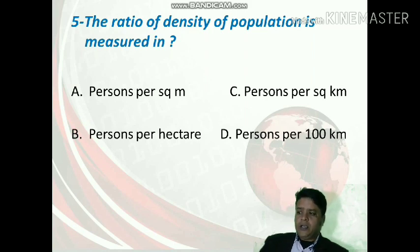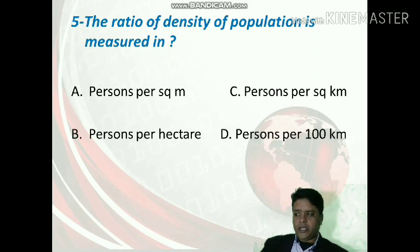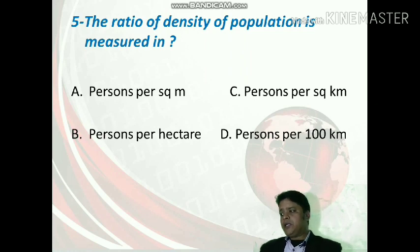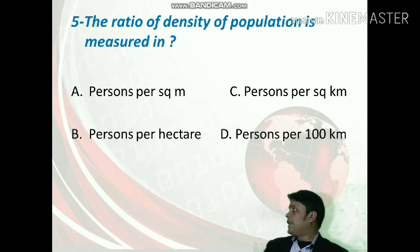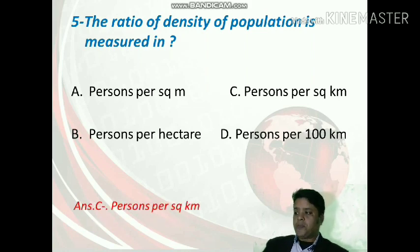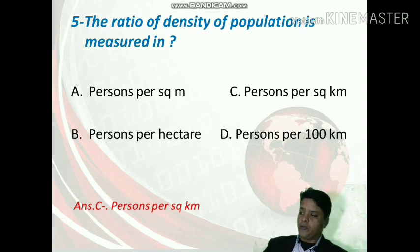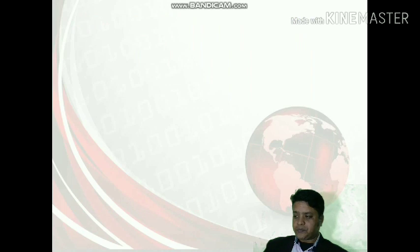The next question is about how population density is measured. The options are person per square kilometer, person per hectare, and person per hundred kilometers. The correct option is person per square kilometer — this is the standard unit used to measure population density.